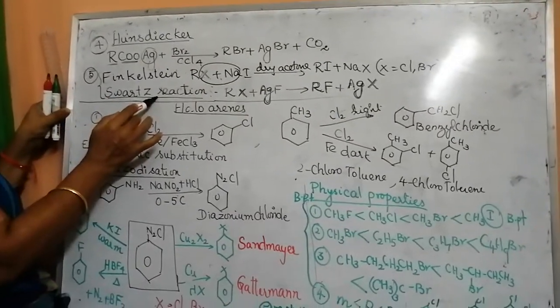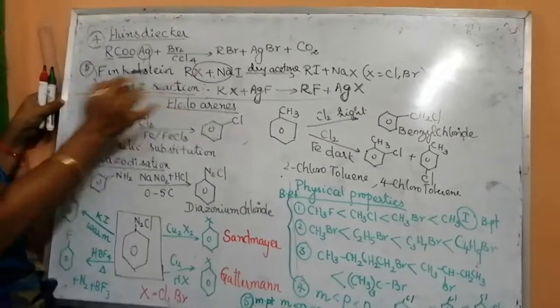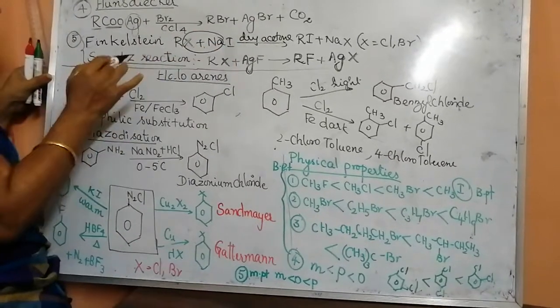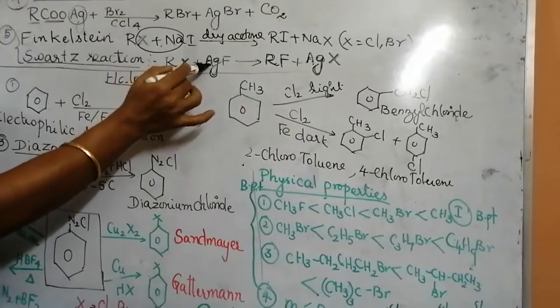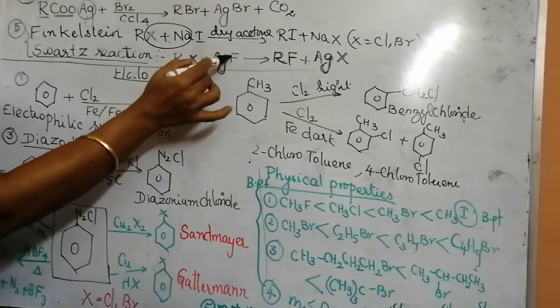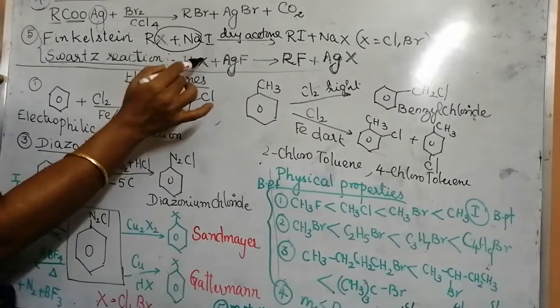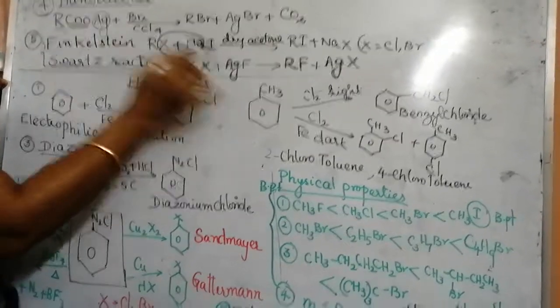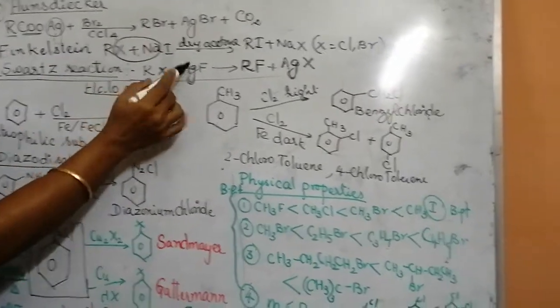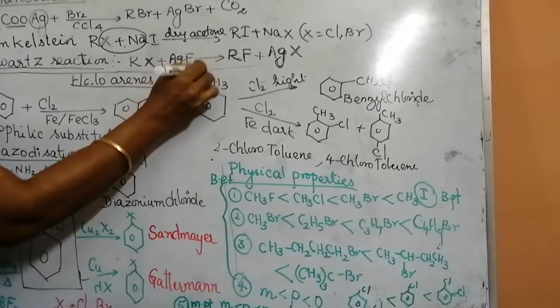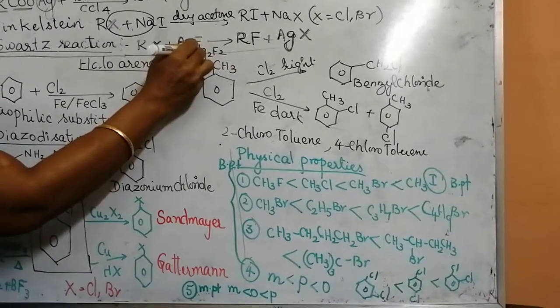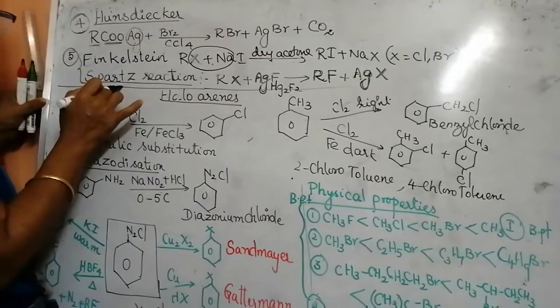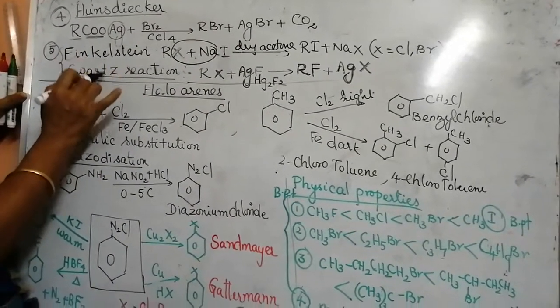Next is Swartz reaction. You remember, Swartz means F will come. Finkelstein means F will not come. Swartz reaction, again you are taking RX. When treated with AgF, the F will be substituting the chlorine or bromine. You will get RF plus AgX. Instead of AgF, we can use Hg2F2 also, or mercuric fluoride. Finkelstein and Swartz reaction both are very very important. Often this question will be asked.